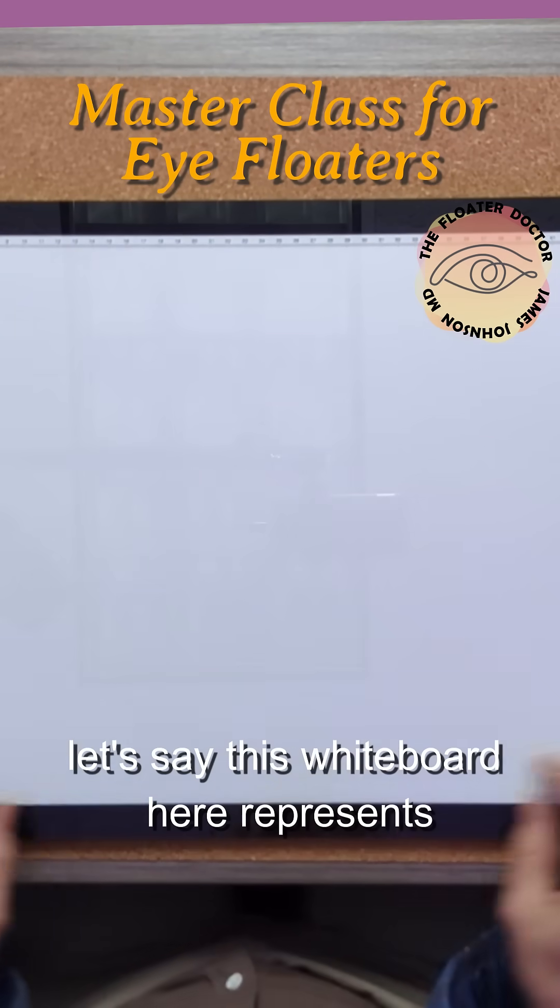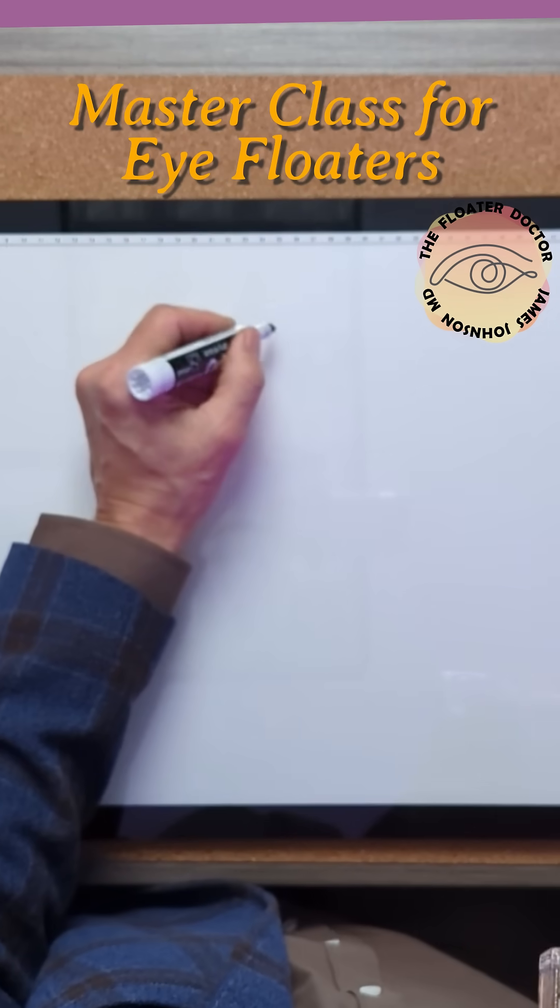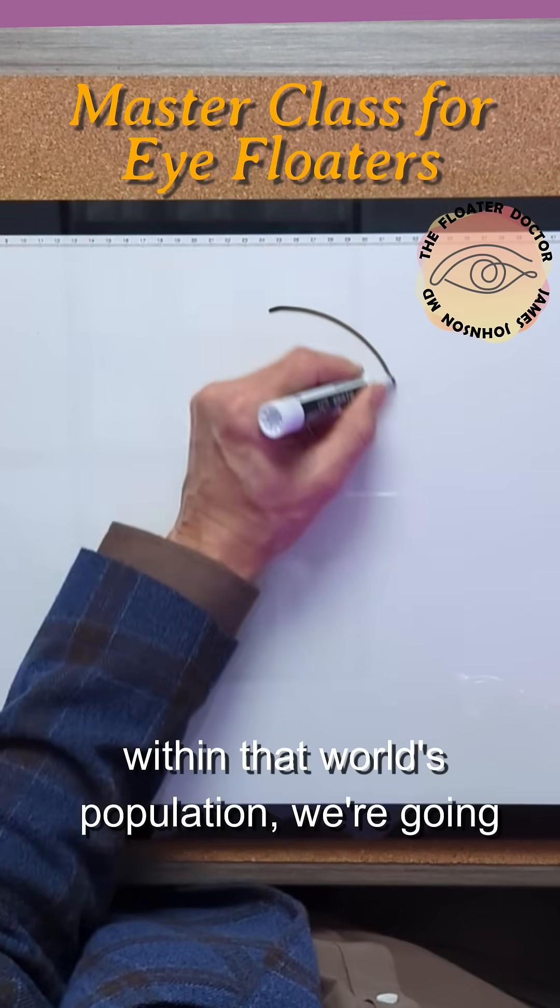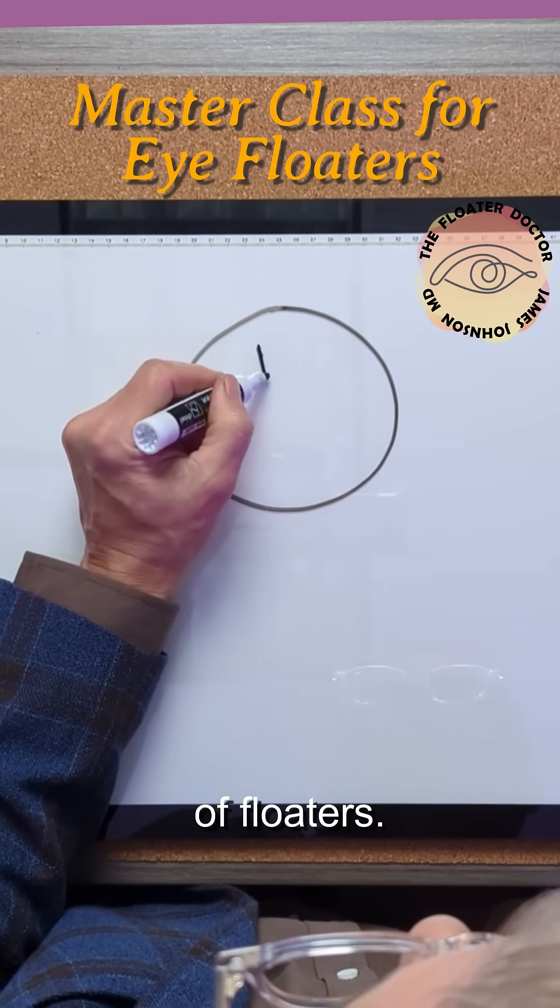Let's say this whiteboard here represents all of the world's population. And within that world's population, we're going to draw a circle representing all the people that have all various forms of floaters.